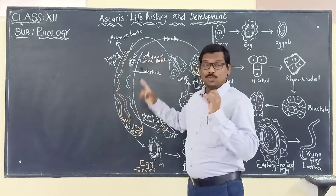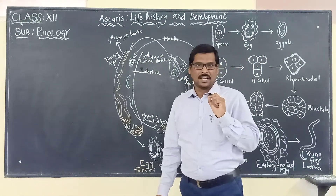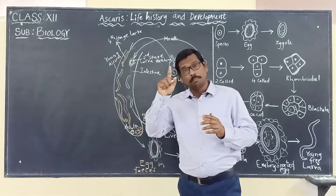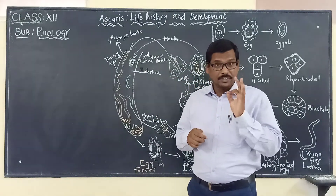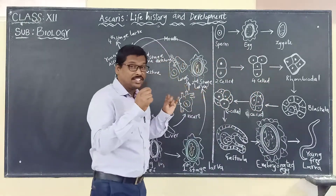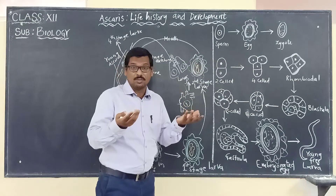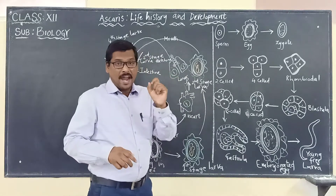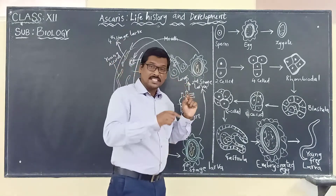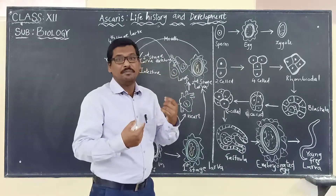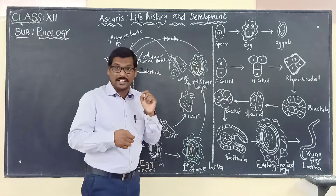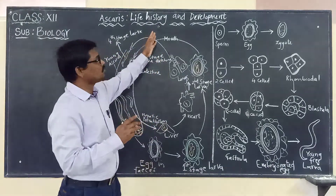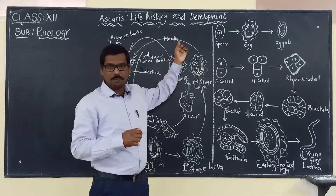We know that Ascaris lumbricoides is causing a disease called ascariasis, which is infecting the small intestine. We are going to discuss how it is completing its life cycle in humans. We should remember that this is a dioecious organism, meaning the sexes are separate. We can also use the word dimorphic. Because this organism completes its life cycle within one host — the humans — we call it monogenetic.